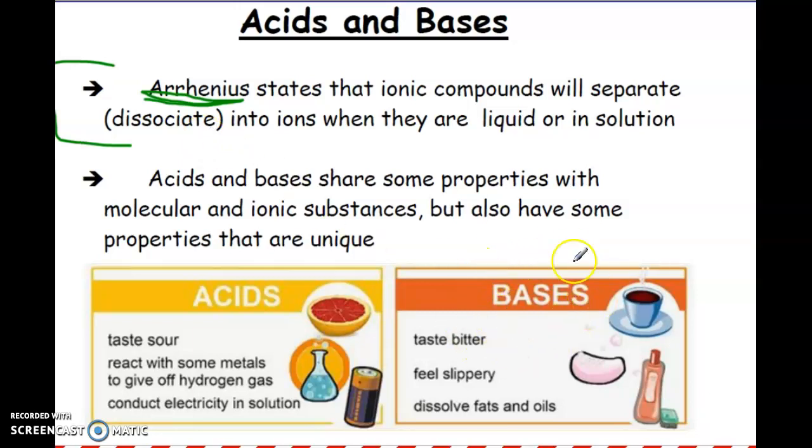Bases are typically known as dissociating, very similar to ionic compounds. But acids have a new term that we're going to be using called ionization. But essentially, it's the same thing. You have a compound or a molecule that is becoming ions when in solution.